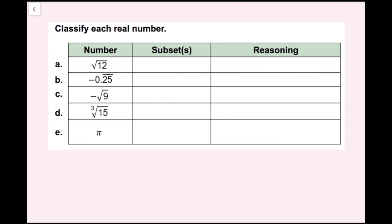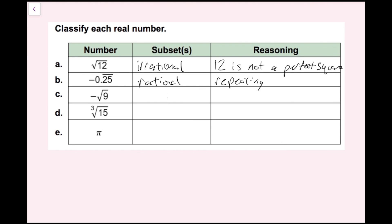For this example, we're going to classify each real number. For part a, we have the square root of 12. This is going to be an irrational number, because we're taking a square root of a non-perfect square — 12 is not a perfect square. For part b, we have negative 0.25 repeating. Repeating decimals can always be put into fraction form, which means this is a rational number. Repeating decimals are rational.